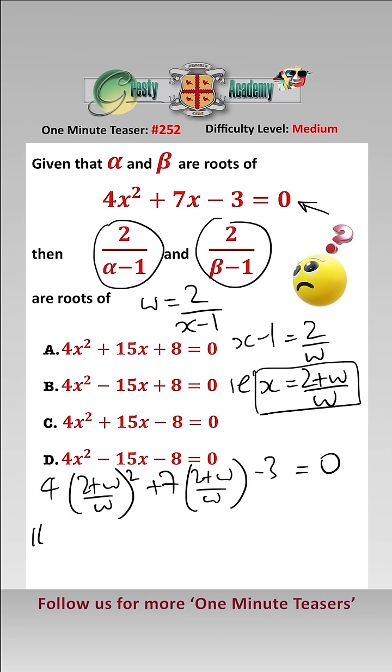Expanding all of that out gives us 16 add 16w add 4w squared add 14w add 7w squared minus 3w squared equals 0. And collecting like terms, that gives us 8w squared add 30w add 16 equals 0.